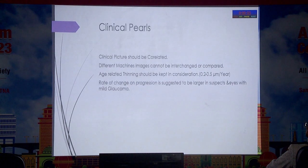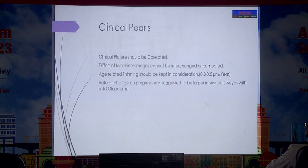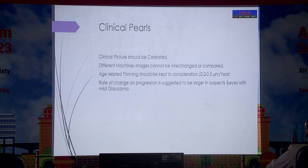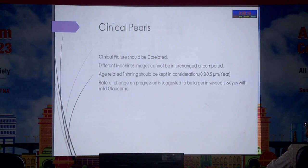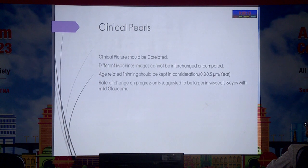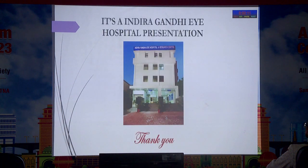In conclusion, I'd like to highlight a case where there was disc damage and corresponding field change. Corresponding field changes only come when there is loss of 40% of axonal cells. But here you can see how beautifully the change was picked up with OCT before it appeared on the visual field — that is the importance of correlating disc structure and function. Clinical pearls: clinical pictures should always be correlated, different machine images cannot be interchanged or compared, age-related thinning should always be kept in mind, and the rate of change in progression is suggested to be larger in suspects and eyes with mild glaucoma.